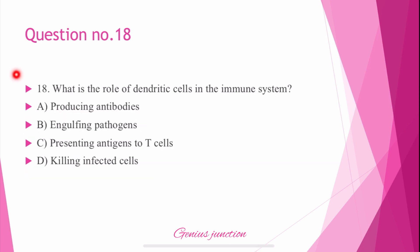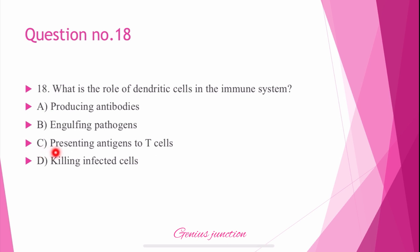Question number 18: What is the role of dendritic cells in the immune system? Options are: producing antibodies, engulfing pathogens, presenting antigens to T cells, or killing infected cells. The right answer is C — presenting antigens to T cells is the role of dendritic cells in the immune system.